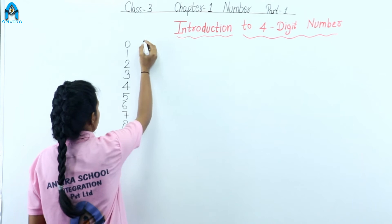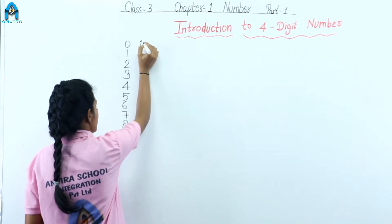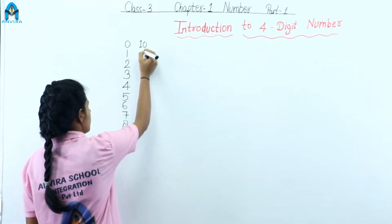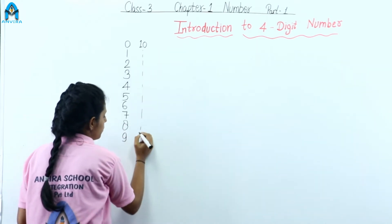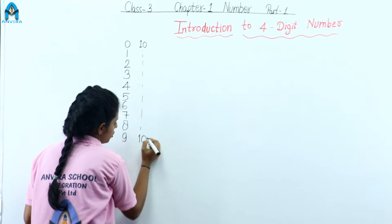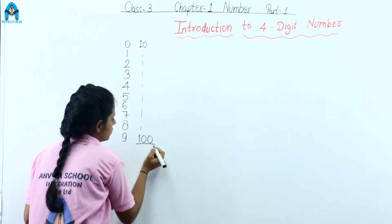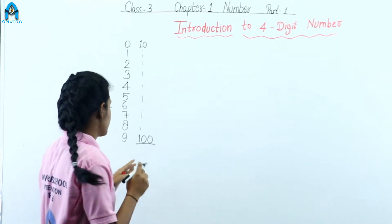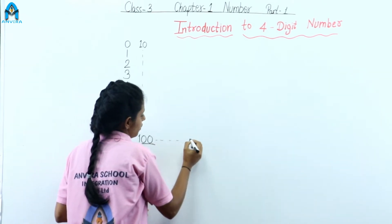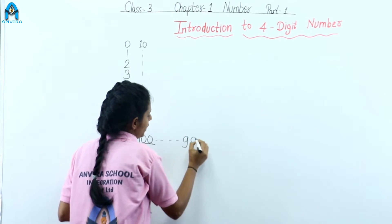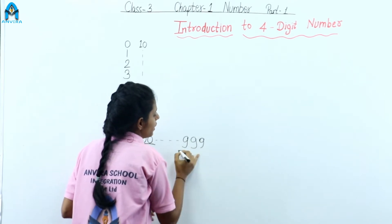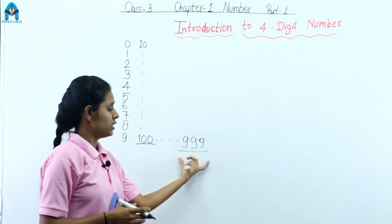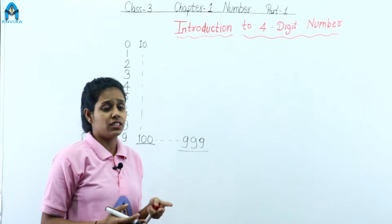After 9, here is 10. This is a 2-digit number. From this we reach a 3-digit number. 100 is the smallest 3-digit number. Then we go and find the greatest 3-digit number, which is 999. So 999 is the greatest 3-digit number.